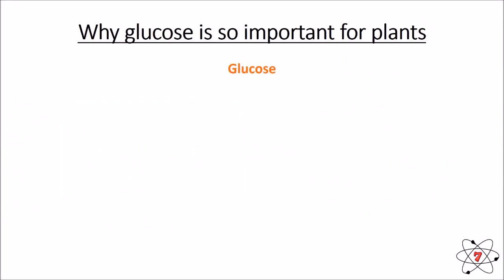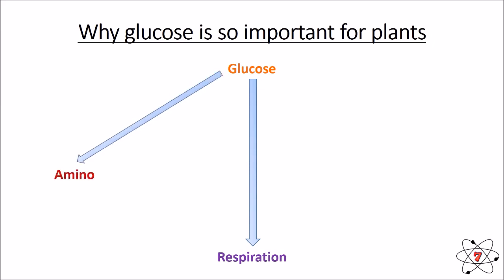Glucose is one of the most important substances plants produce. It can be used directly in respiration: glucose + oxygen → carbon dioxide + water + energy, which is the reverse reaction to photosynthesis — making glucose the primary food source for a plant. Glucose can also provide energy to make amino acids, and amino acids can make proteins, which are required for growth and repair.